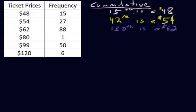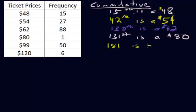So now the 131st is a $80 ticket, because we only have one $80 ticket. Then go through the 50 people who have a $99 ticket — that would make 181 the last $99 ticket. And adding six more people for the $120 tickets brings us to 187. So the 187th is a $120 ticket.